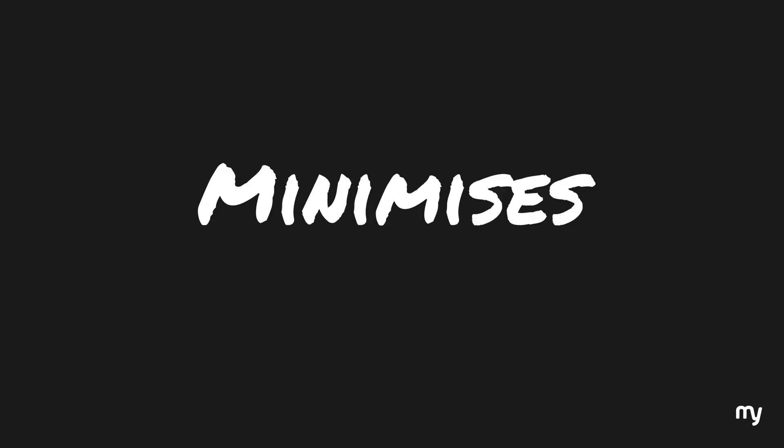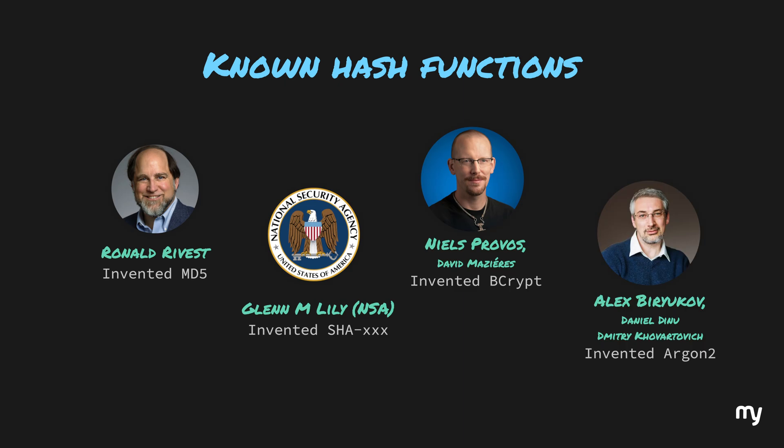Now, you might be thinking that how do we write a hash function which abides by all three rules and also minimizes or completely removes the possibility of hash collisions? Well, the good news is, most likely, you don't need to. There are a lot of computer scientists who have spent a lot of time and research in developing algorithms which qualify as near perfect hash functions, like SHA-256, bcrypt, argon2, and such.